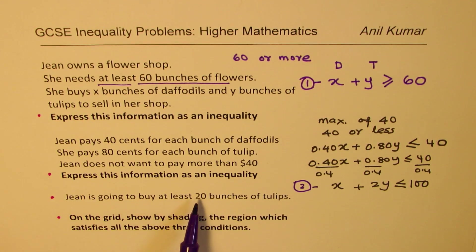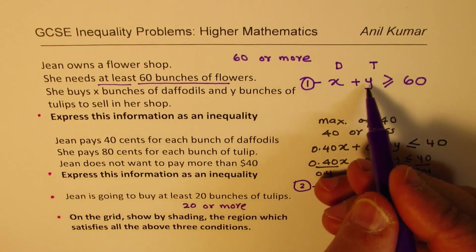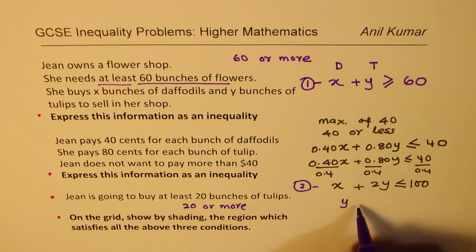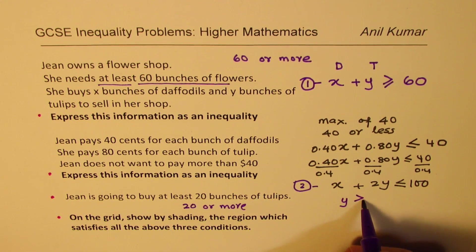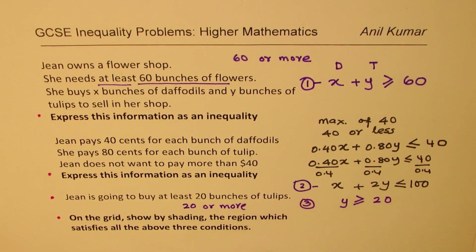Third, Jean is going to buy at least 20 bunches of tulips. That means 20 or more tulips. Tulips is Y for us. So we get Y should be greater than or equal to 20. So that gives us the third equation.